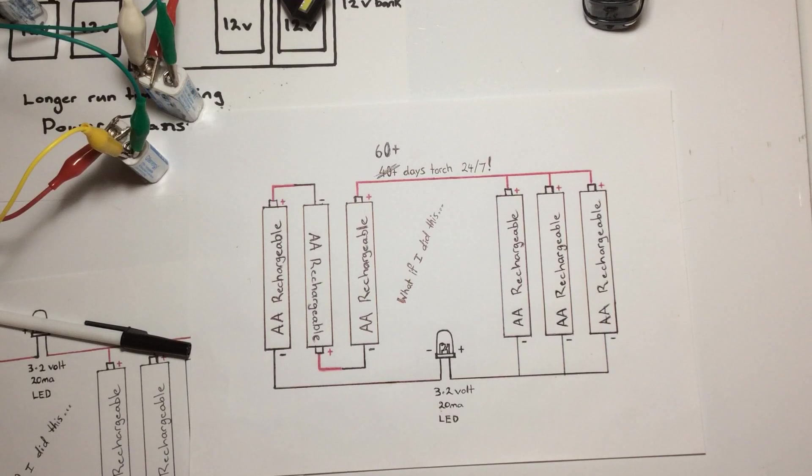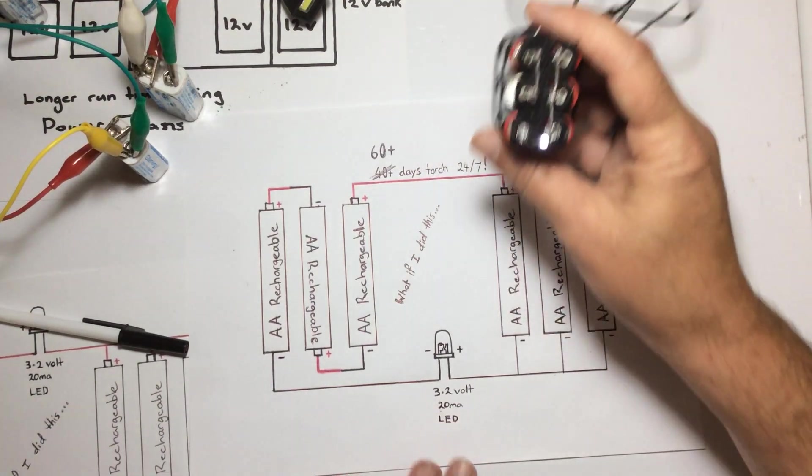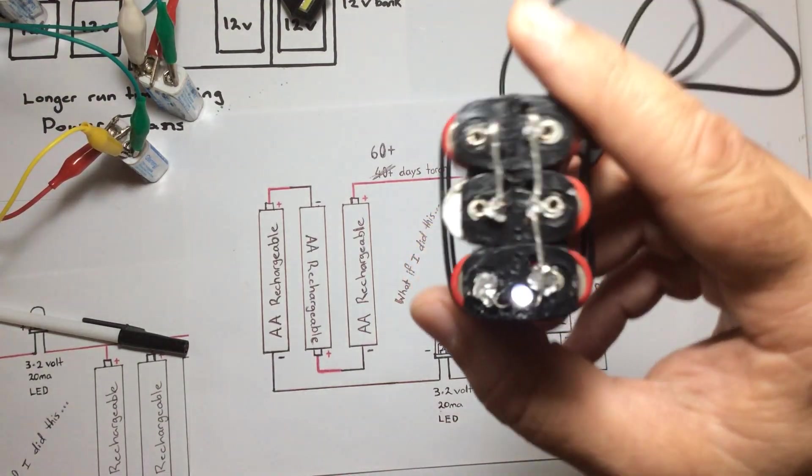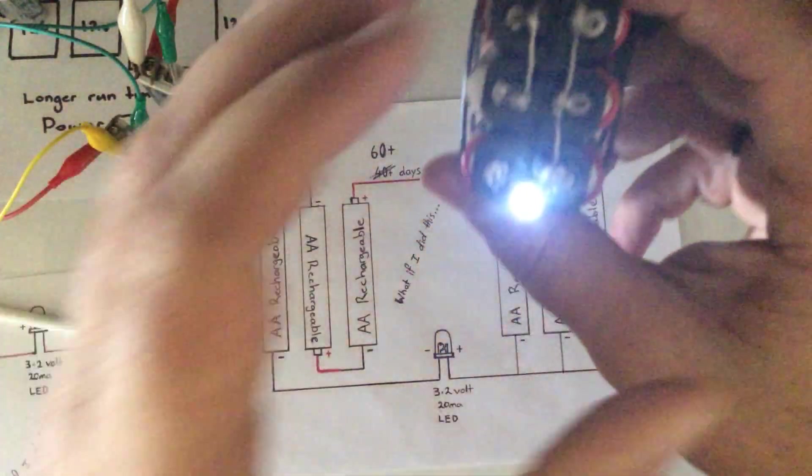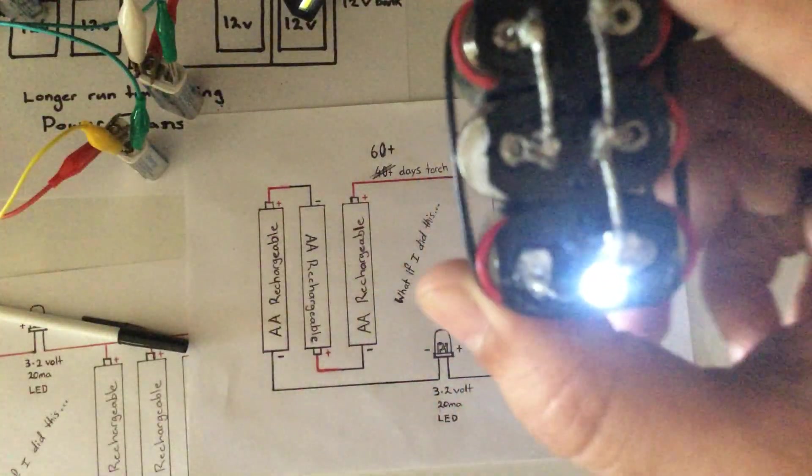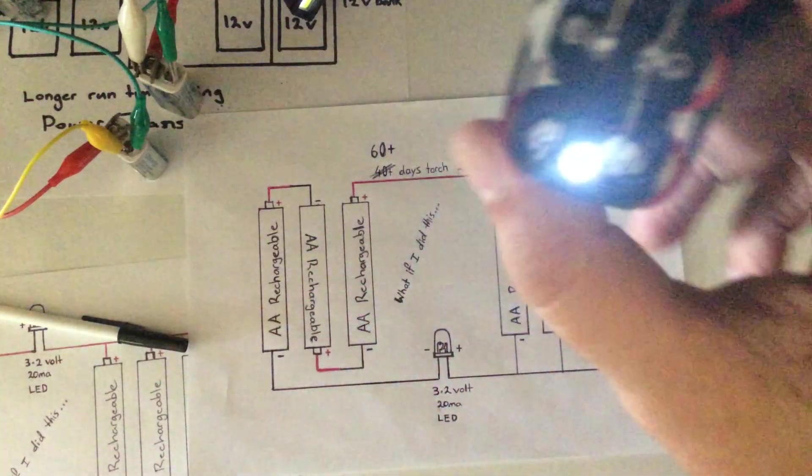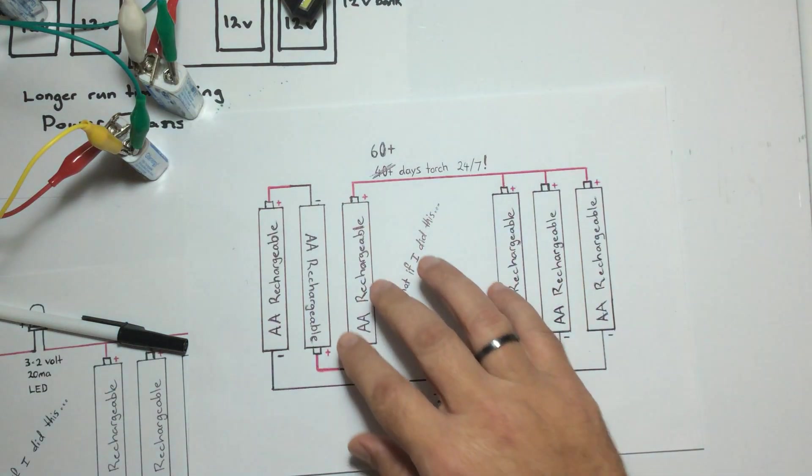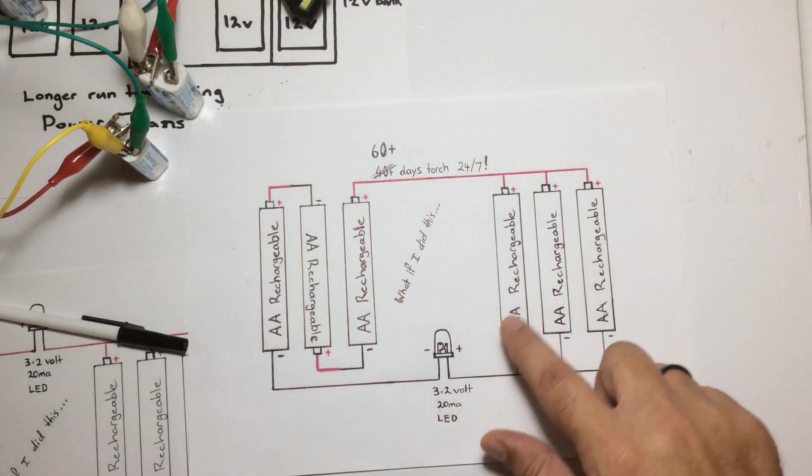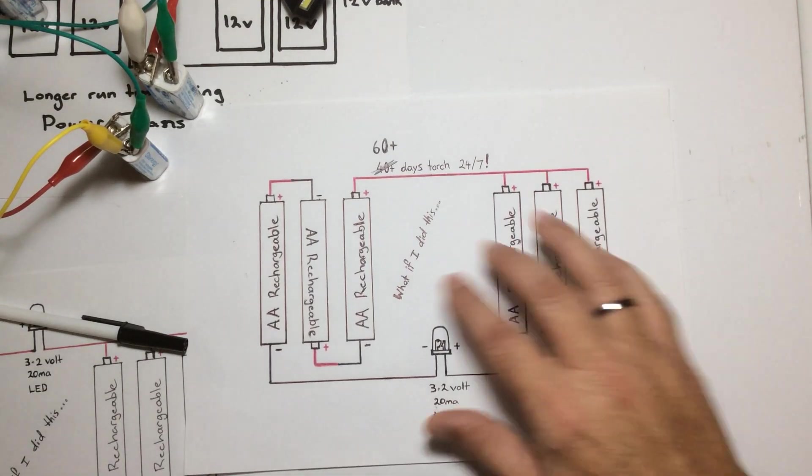I wanted to do this video because it's at the 60-day mark for what I first considered to be a 40-day torch. We're now at the 60-day mark and this system just involves taking the run batteries on this side and swapping them over to be receiving batteries on this side of that circuit diagram.